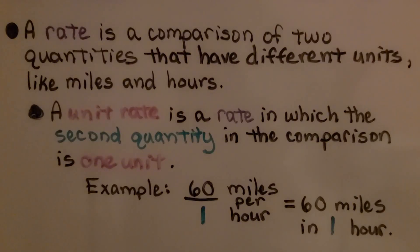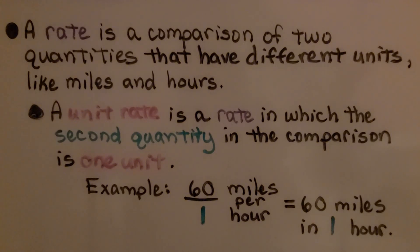A rate is a comparison of two quantities that have different units, like miles and hours. A unit rate is a rate in which the second quantity in the comparison is one unit. For example, 60 miles per hour — that's 60 miles in one hour.